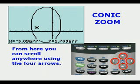So you press Zoom Box, it takes you right to that center, which can help you understand what kind of conic you have. From here you can scroll anywhere using the four arrows. Here the cursor is just above and to the left of an x-intercept.